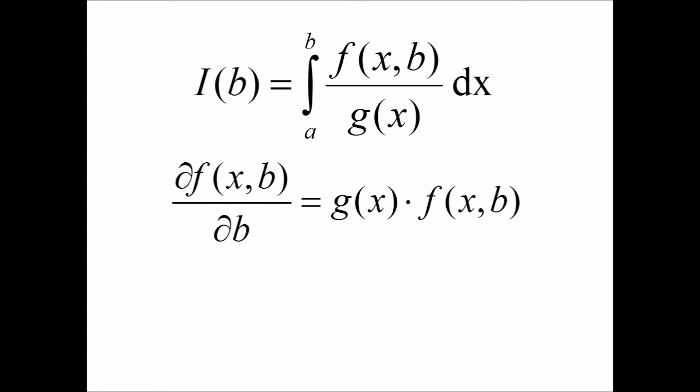We'd like to eliminate the denominator from the integral. Since the method is called differentiation under the integral sign, we'll take the partial of the integral and hope that by doing this the denominator is eliminated. To ensure this happens, we'll demand that the partial of f equals g of x times f of x, b.